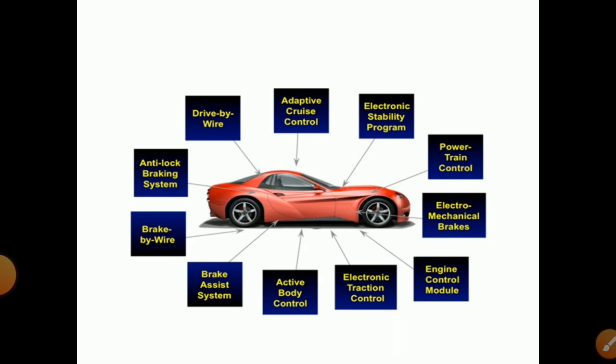Adaptive cruise control requires speed sensors for its working. Another system is the electronic stability program, which stabilizes all electronic components in the car. Other automobile systems include powertrain control, electromechanical brakes, engine control module, electronic traction control, active body control, brake assistance system, brake-by-wire, anti-lock braking system (ABS), and drive-by-wire.